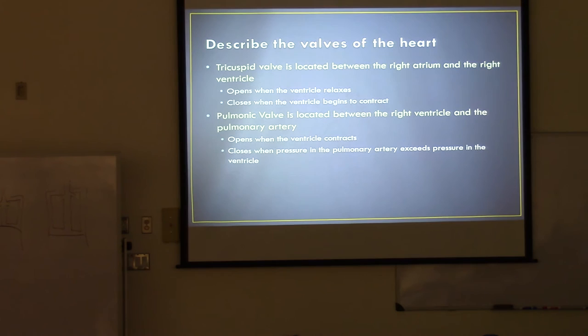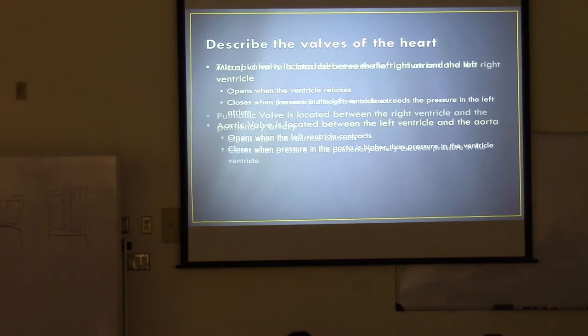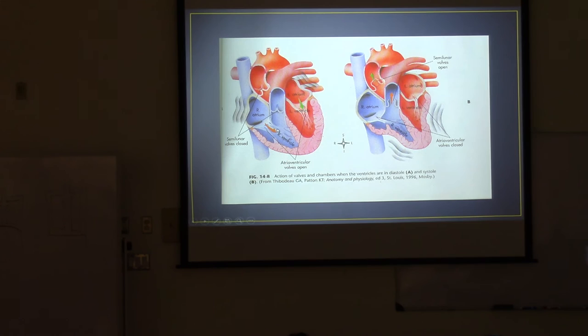The pulmonic valve opens when the ventricle contracts and closes when pressure in the pulmonary artery exceeds pressure in the ventricle. When the heart contracts and squeezes the blood, that contraction pushes the valve open — nothing has to actively happen. The valves just feel the high pressure of blood in the ventricle and are pushed open. When there's a lot of blood ahead of them, it pushes the valve shut. There are no muscles that have to contract; the valves just work on their own.